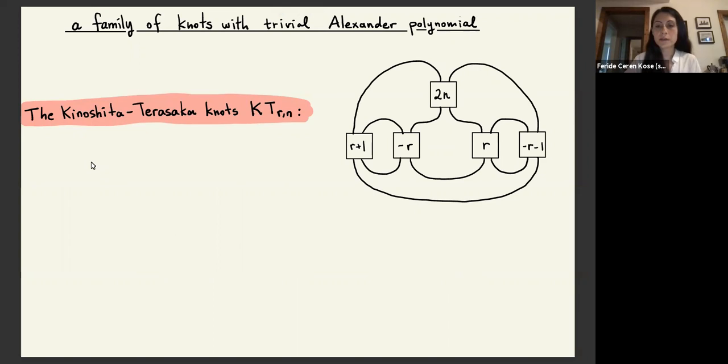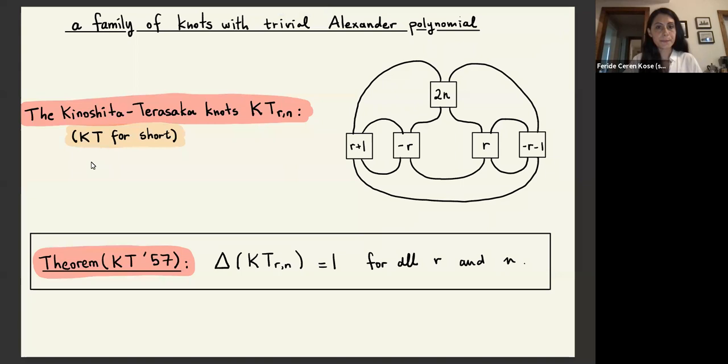But when we consider other powerful invariants like Alexander polynomial, the same question has actually been answered a long time ago. We know that there are actually infinitely many knots with trivial Alexander polynomial. And here is an example of such a family called the Kinoshita-Terasaka knot family.